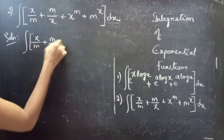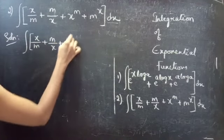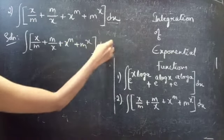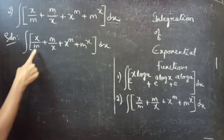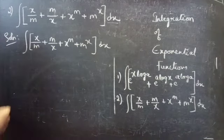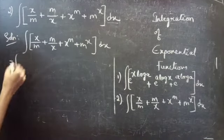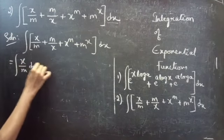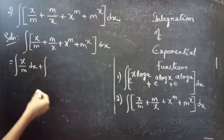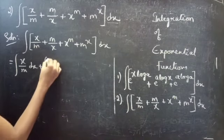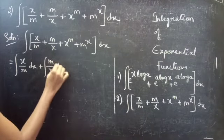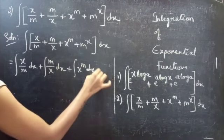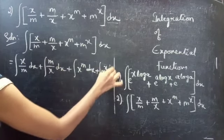So you write it as integral of (x/m + m/x + x^m + m^x) dx. Since m is constant, you split this into: integral (x/m) dx plus integral (m/x) dx plus integral x^m dx plus integral m^x dx.